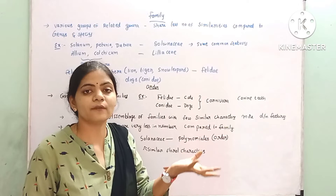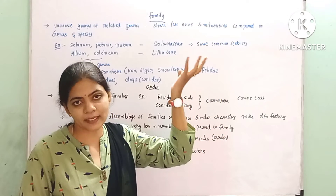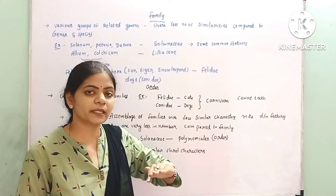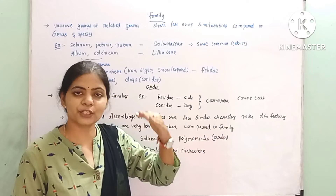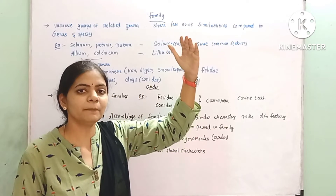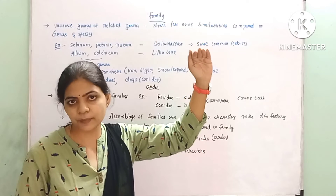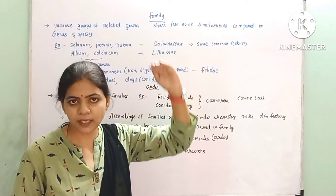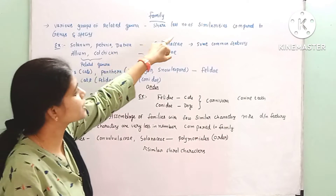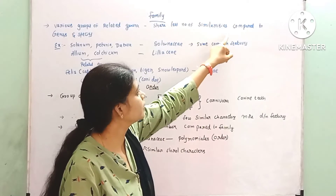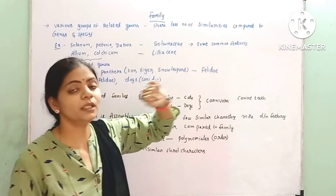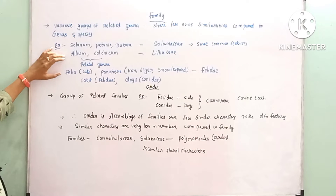When we go in the upward direction in the taxonomic hierarchy, the number of similar characters decreases. At the species level the number of similar characters is highest. They share fewer similar characters as we go up, compared to species and genus.